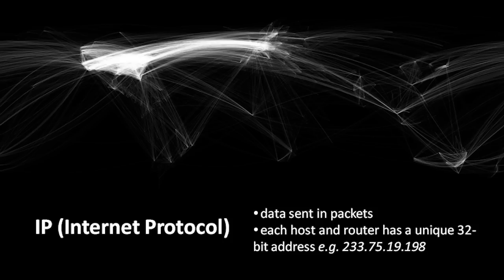Just like a letter or package making its way through the mail system, a packet is copied from one router to the next until it reaches its destination. When a computer sends a packet, it needs to be able to specify where the packet should go — which computer on the internet should be the recipient. For the internet to work, each system on the internet needs to have a unique address. Currently, these addresses are 32 bits in size, and because 2 to the 32nd power is something over 4 billion, we have that number of unique addresses available.